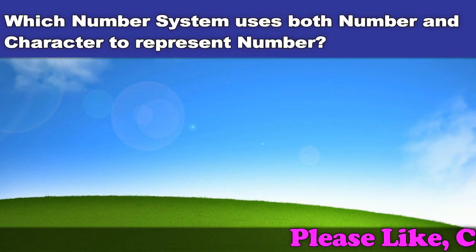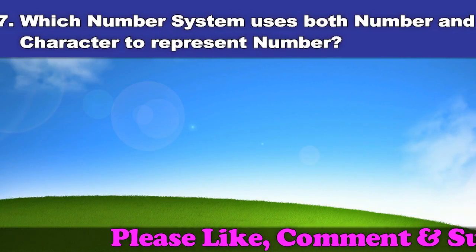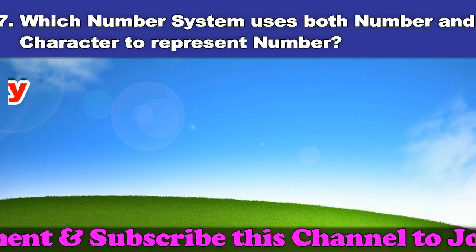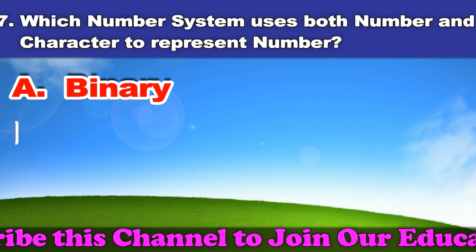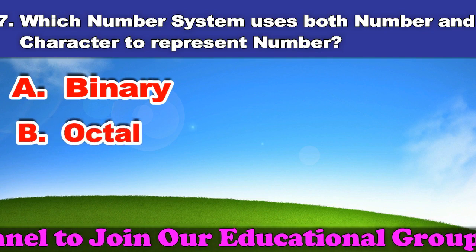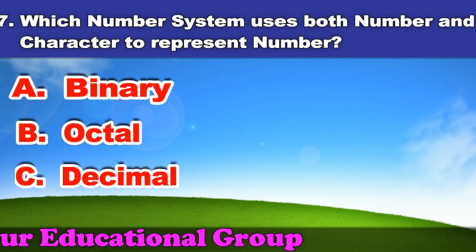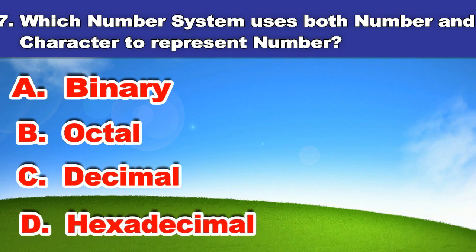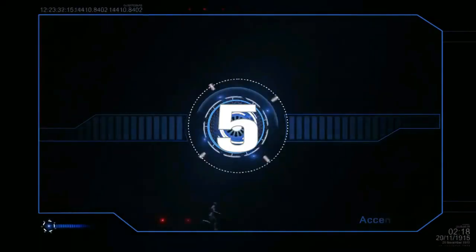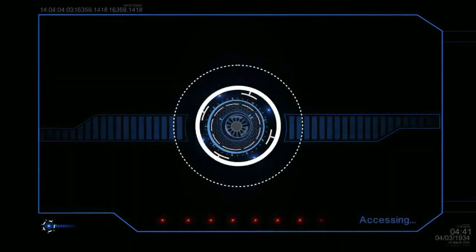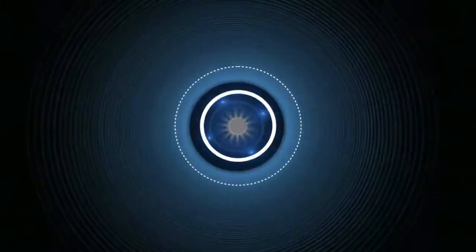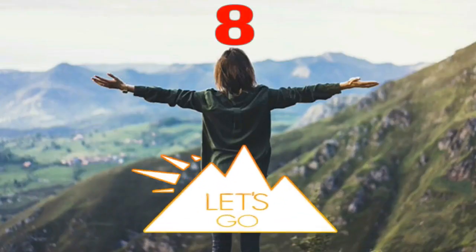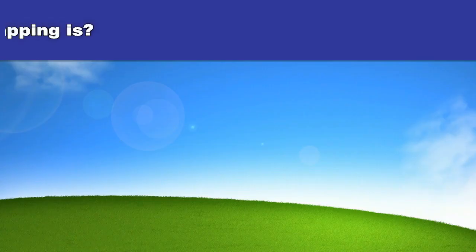Seventh question: Which number system uses both numbers and characters to represent a number? A. Binary. B. Octal. C. Decimal. D. Hexadecimal. And the answer is hexadecimal.